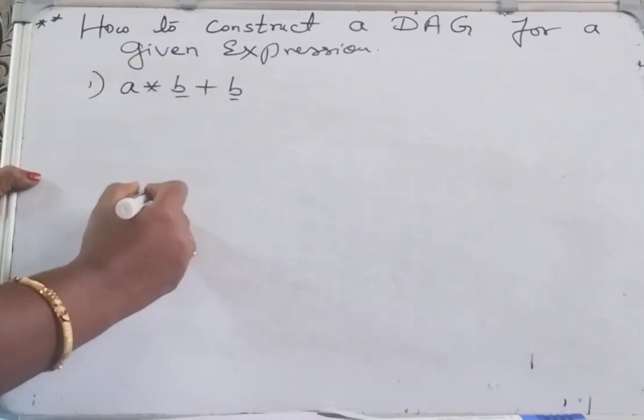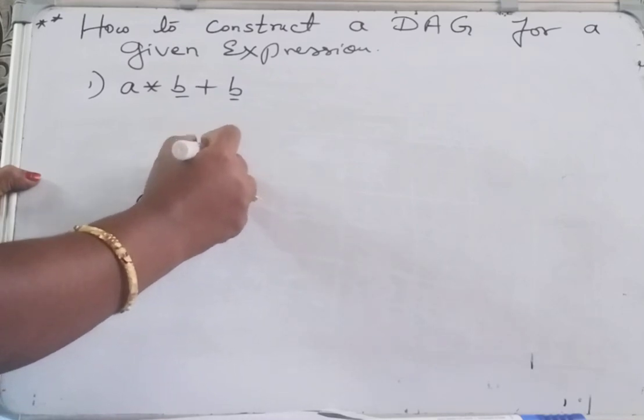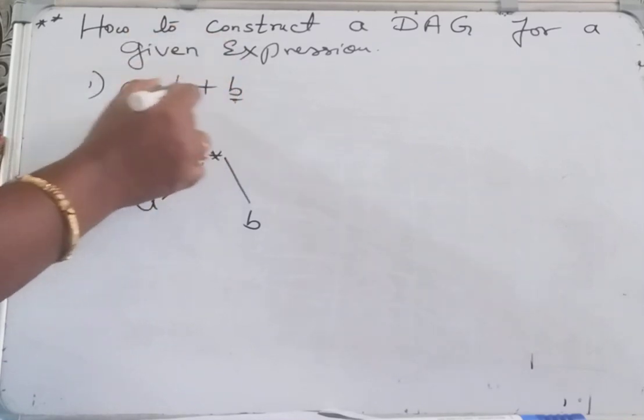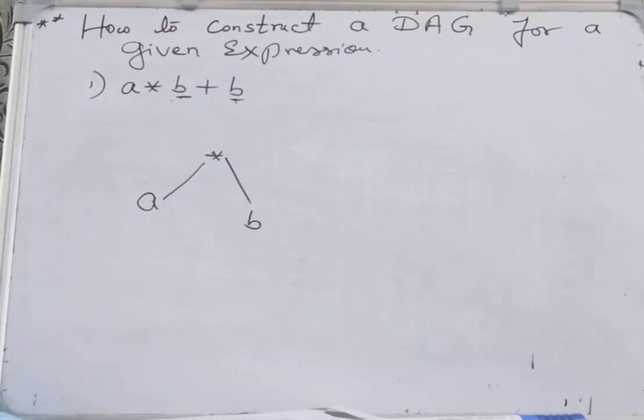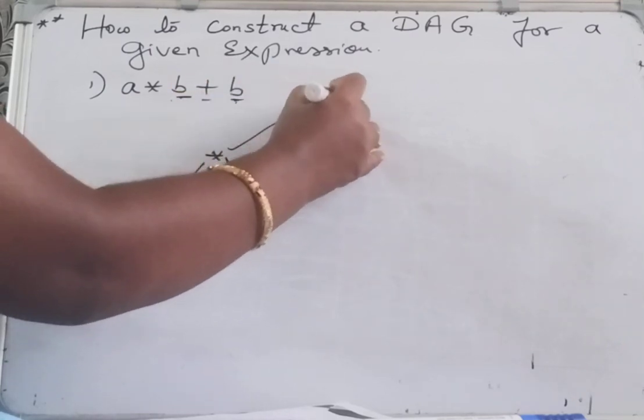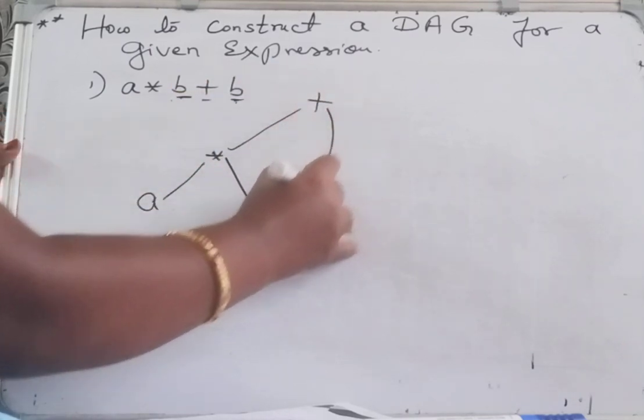So in the leaf node, first you take A, right, star B. And here the common subexpression B is present here as well as here. Now for this, the next operator is plus. See here I am just putting it like this.